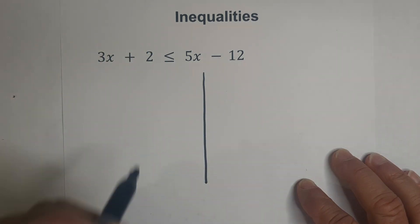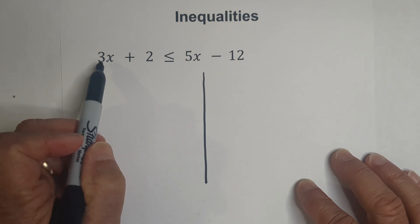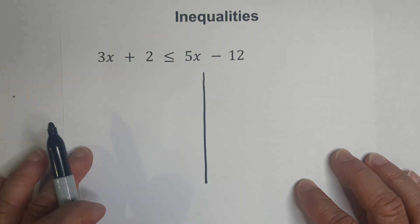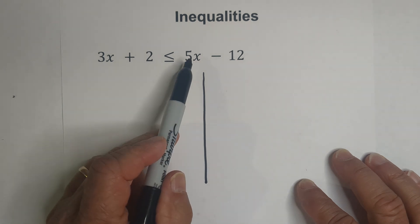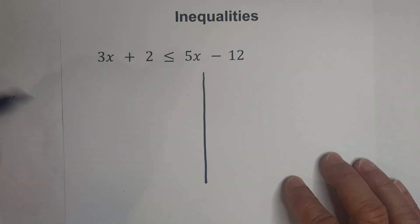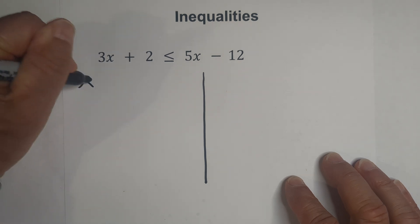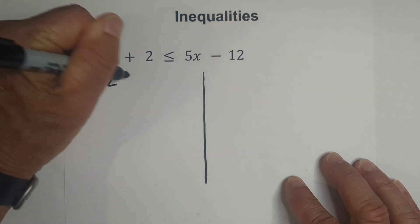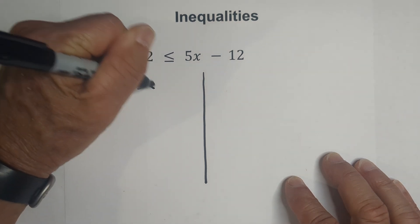You may have been taught that you subtract the smaller variable from the larger variable, and that does work. Or you may have been taught to move the variables to the left and the constants to the right, and that works also. I'll show you both ways and you'll see that you get the same answer.